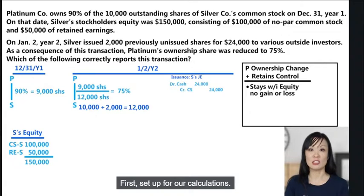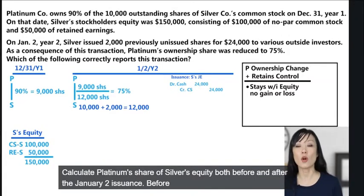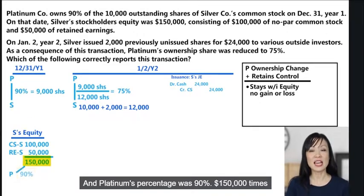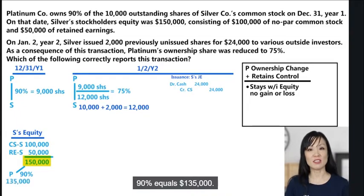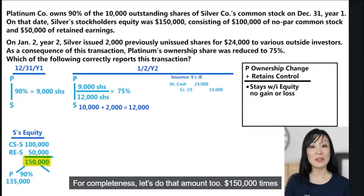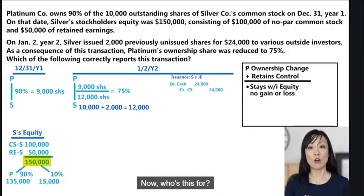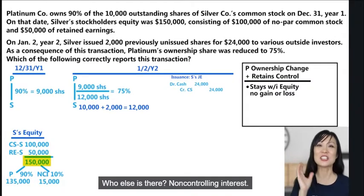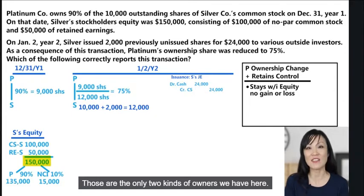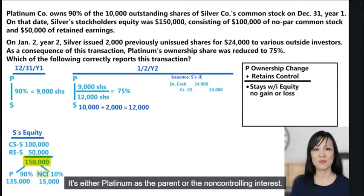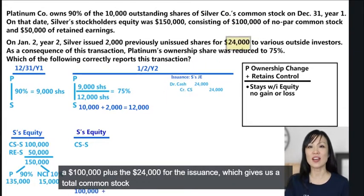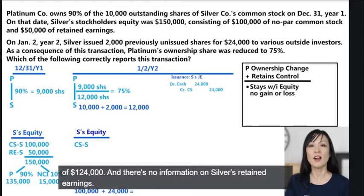Calculate Platinum's share of Silver's equity both before and after the January 2nd issuance. Before the issuance, Silver's equity was $150,000 and Platinum's percentage was 90%, so $150,000 × 90% = $135,000 — that's Platinum's portion. The remaining 10% is $15,000, attributed to the non-controlling interest. After the issuance, Silver's common stock increased to $124,000 ($100,000 + $24,000).